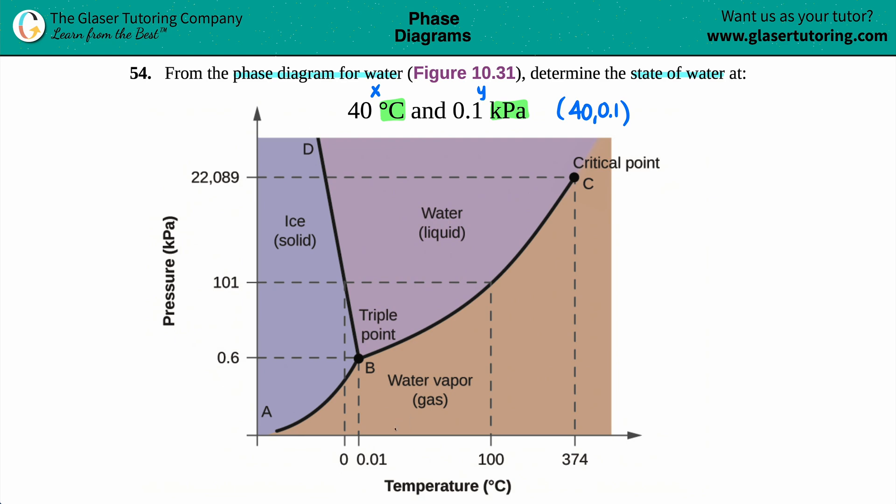It doesn't matter which one you start with. I'll start with 40 degrees Celsius. On here, 40 degrees has to be between 0 and 100, so we just estimate. I like to find the middle point first and work from there. From 0 to 100, this point right here is the middle, so 50.